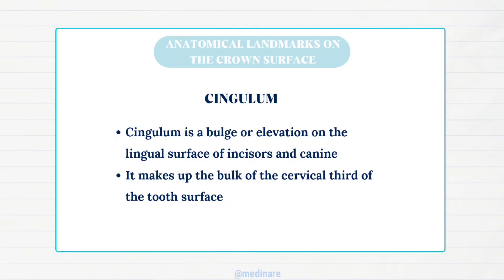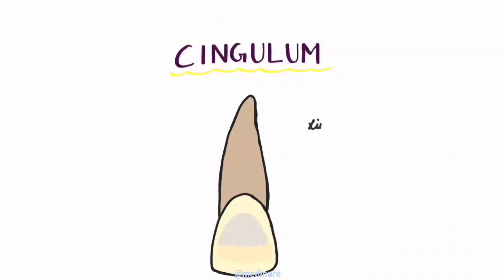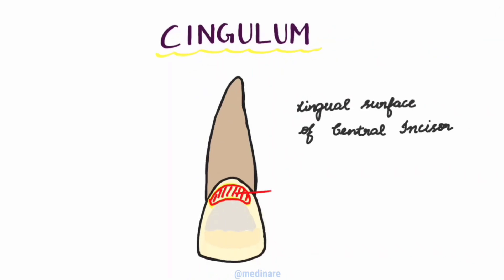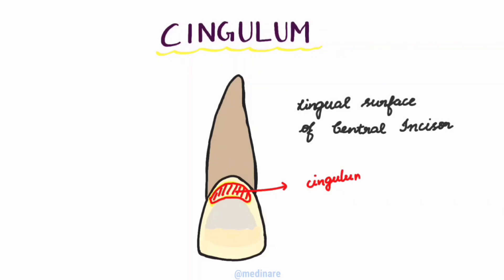Cingulum is the bulge or elevation on the lingual surface of incisors or canines. It is present only in the cervical third of the teeth, making up the bulk of that region. The term cingulum comes from a Latin word meaning girdle, since it encircles the lingual surface of the tooth mesiodistally. Here we can see the cingulum on the lingual surface of the central incisors, girdling the mesiodistal width.